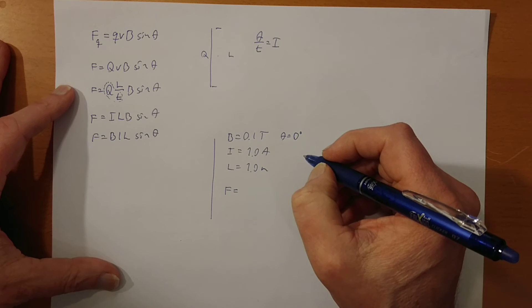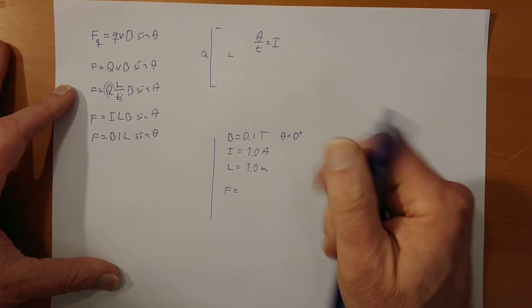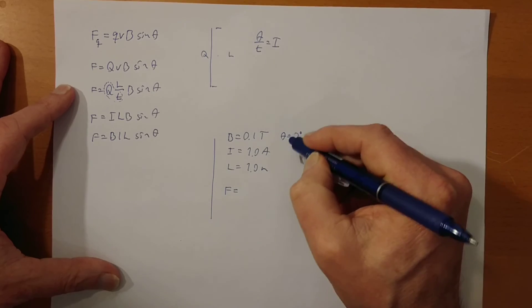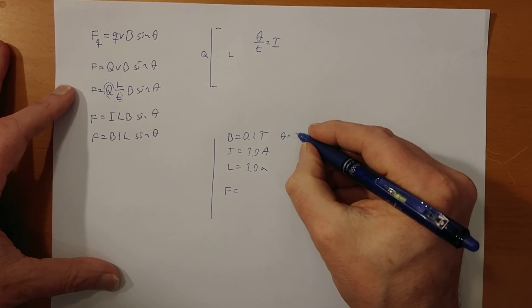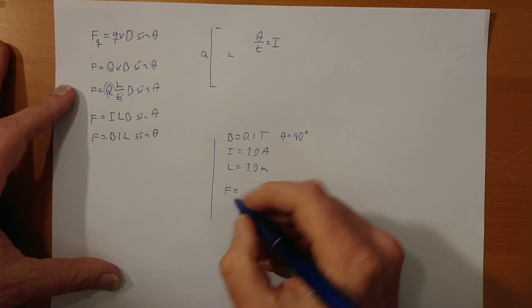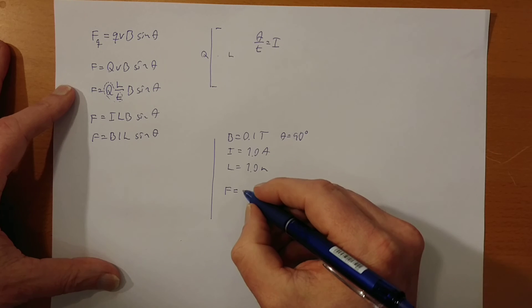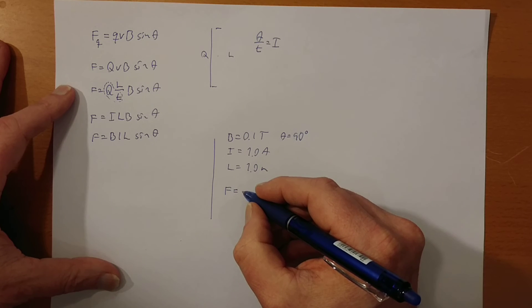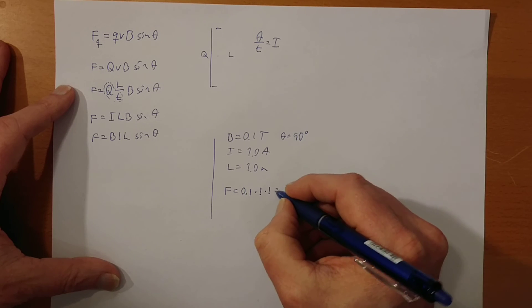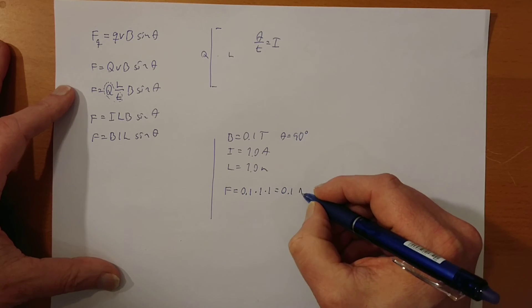Oh sorry, 90 degrees, of course. 0 degrees would be wrong, so 90 degrees. Then we basically add that sin of 90 is 1, so this will end up being 0.1 times 1 times 1 is 0.1 Newtons.